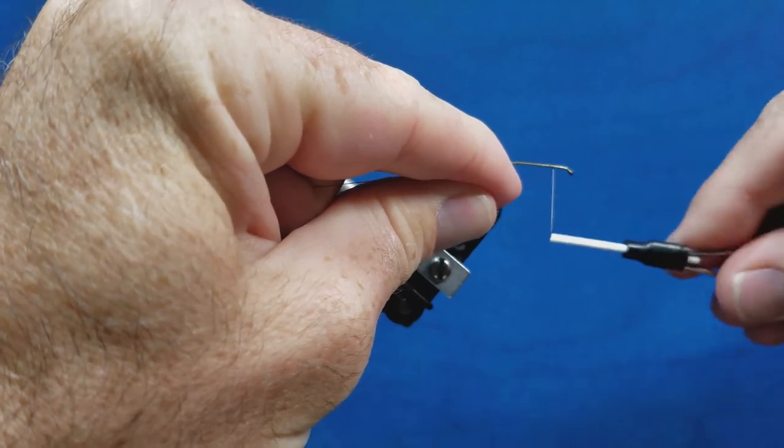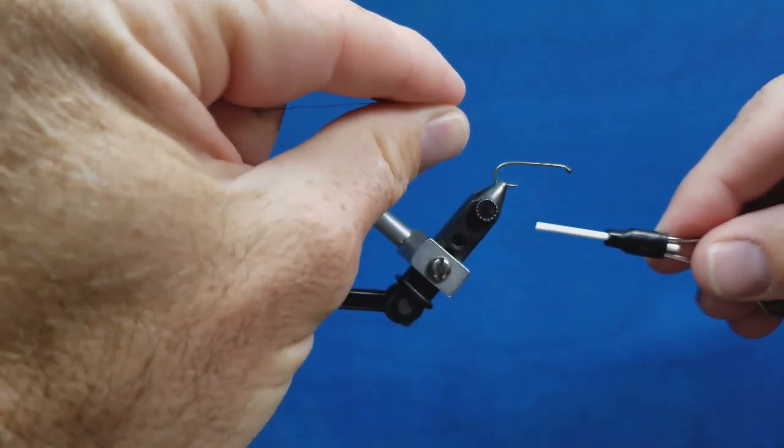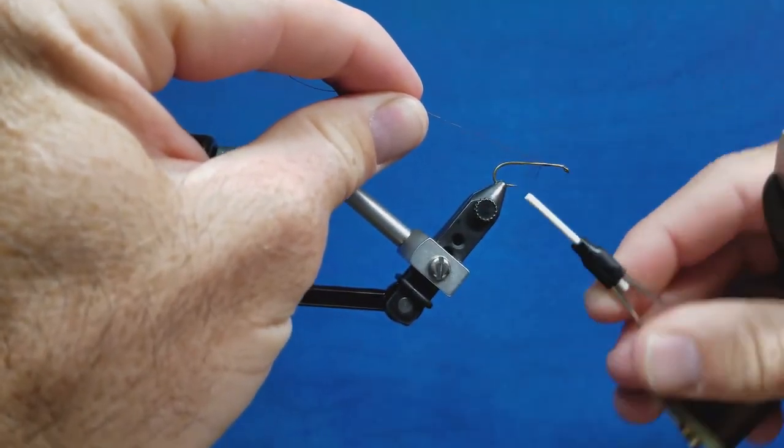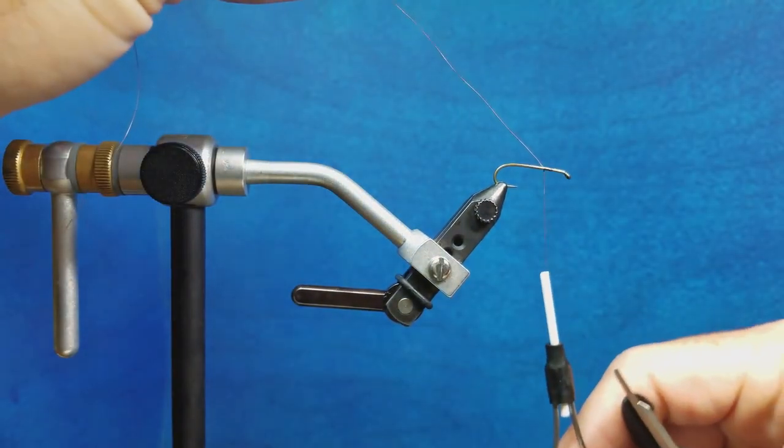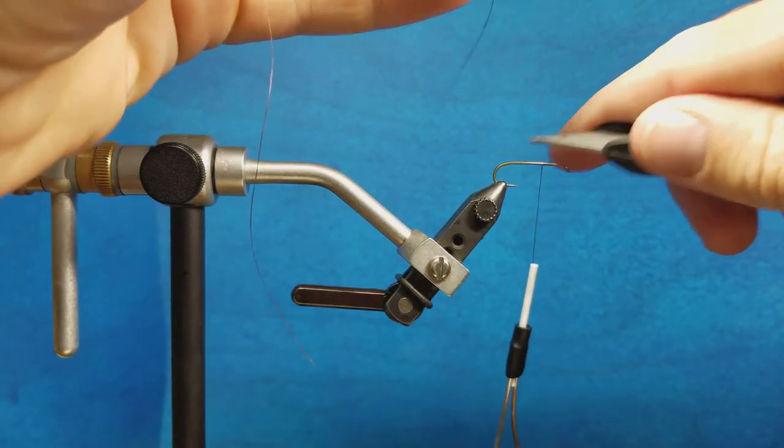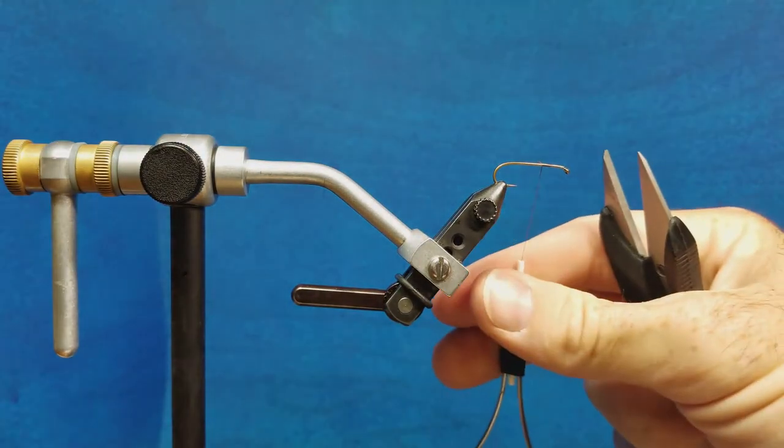And I'm going to start to take wraps back over the top of this tag in my left hand. So as I wrap, I'm going to come back toward my left. As I wrap over this tag end, that's going to trap it underneath the wraps. And with just a couple wraps, the thread is firmly and securely attached to my hook shank. I can snip off the excess and I'm ready to begin the tie-in process.